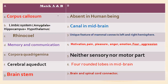We have a question here: in Column A we have a set of terms and words to match with Column B. We'll follow a reverse technique to understand brain function. The key terms are corpus callosum, limbic system, rhinocoel, memory and communication — asking which part is the association area, neither sensory nor motor. Also: corpora quadrigemina, cerebral aqueduct, and the brain stem.